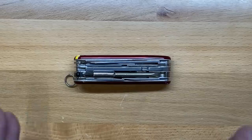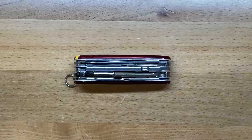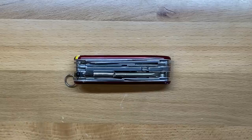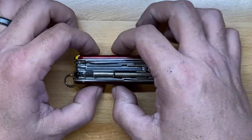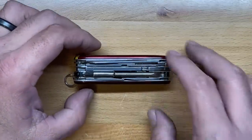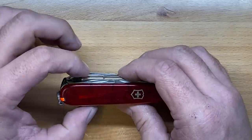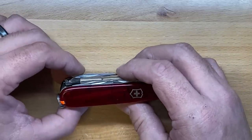First, we'll get the specs out of the way. This is a 91mm frame, so it's about 3 and 9/16ths of an inch long overall. It's about an inch and a 16th wide, or about 27mm, and thickness is right at 1 inch at its thickest point, so about 25mm.